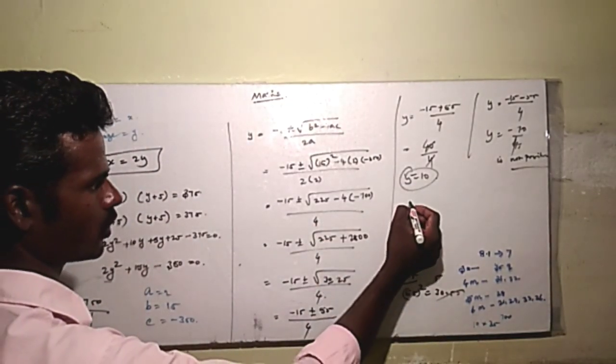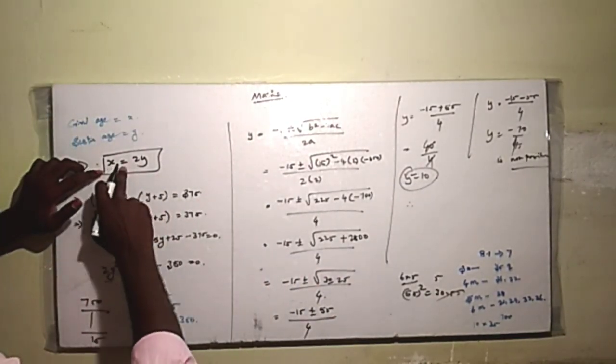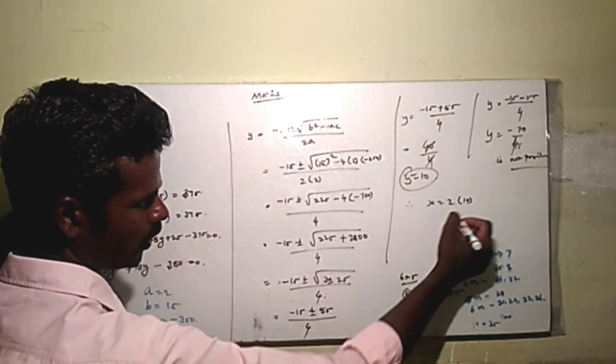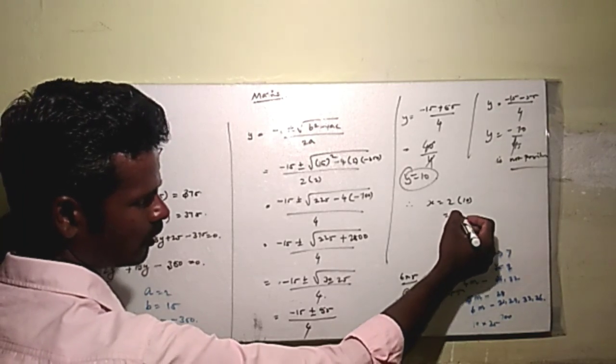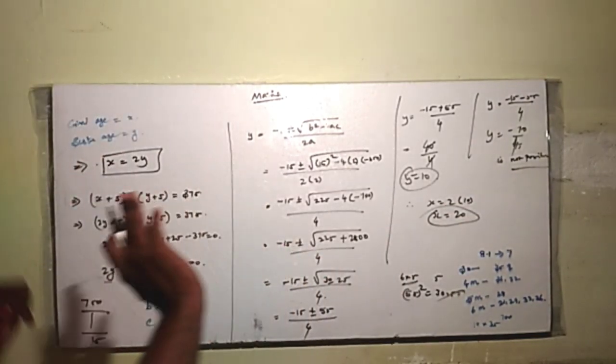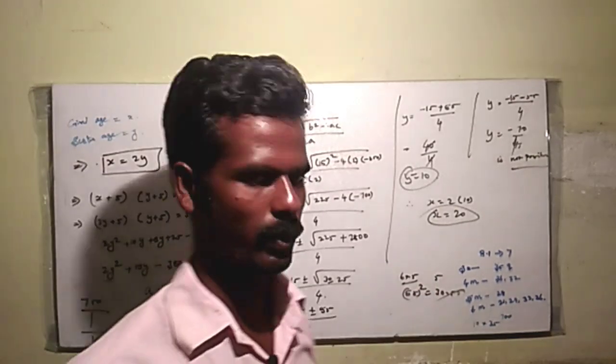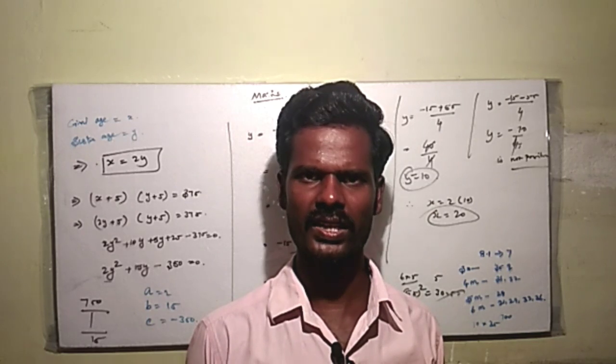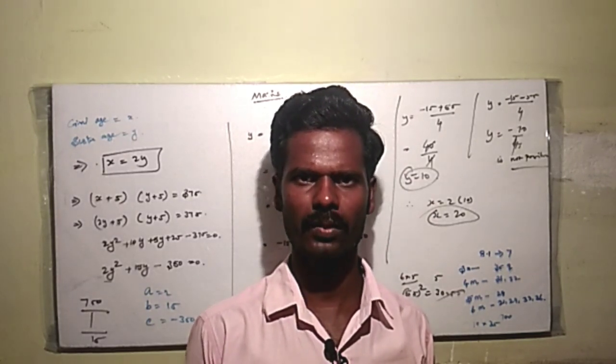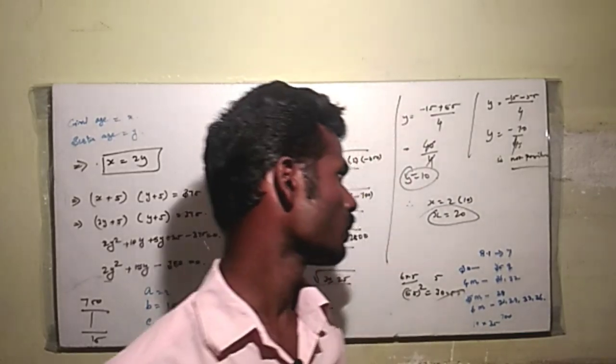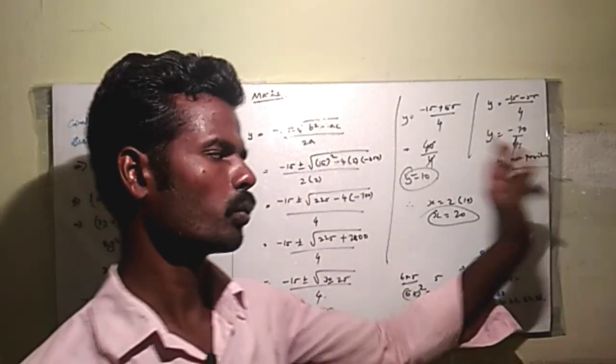Therefore y equals 10. To find x value, the girl's age: x equals 2y, so x equals 2 times 10, which is 20. So the girl's age is 20 and the sister's age is 10. The negative sign is not possible.